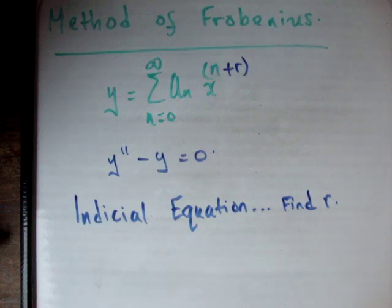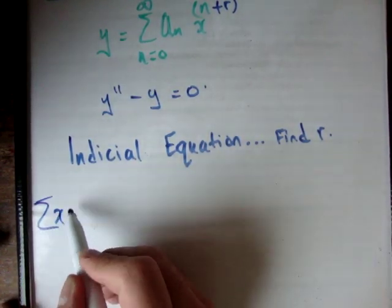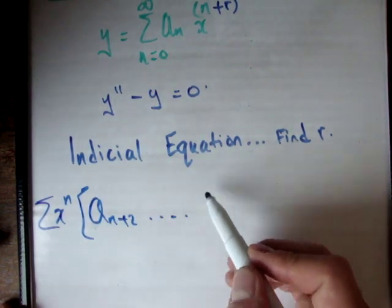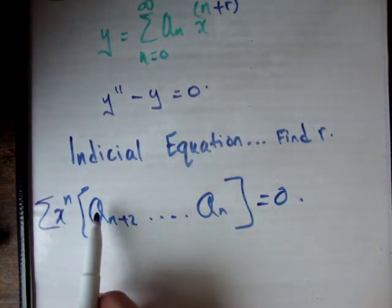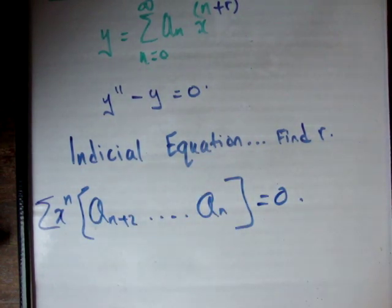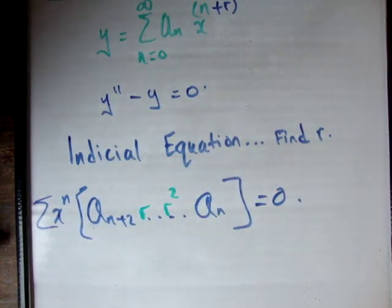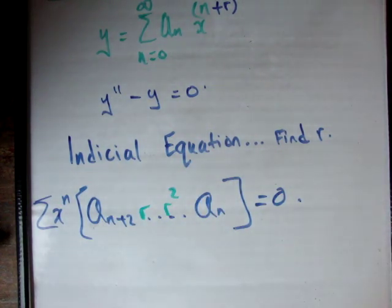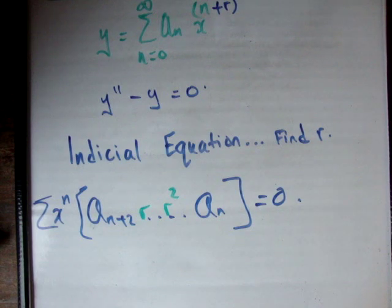We're going to do everything the exact same as we did for solving the power series. We're going to get down—if you remember in the power series we got to something like x to the n times, and we might have a_(n+2), a_n, equals zero, and we got our recurrence relation from here. This time we're also going to have things like r, r squared, all that sort of thing inside there. Before we can actually get our recurrence relation, we will have to find out what the value for r is, and I'll show you how to do that during an example.